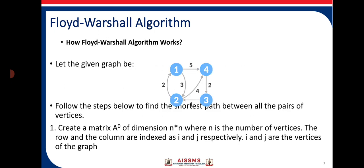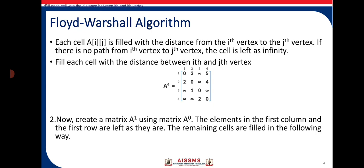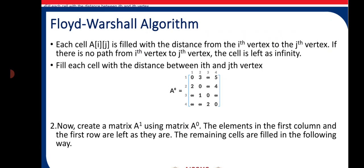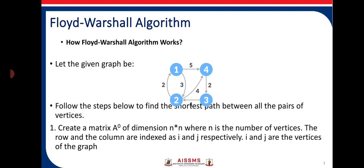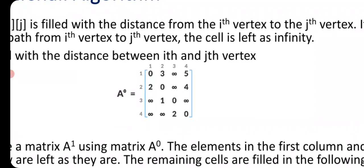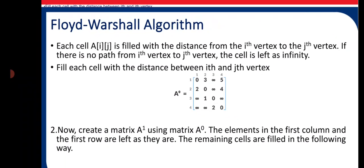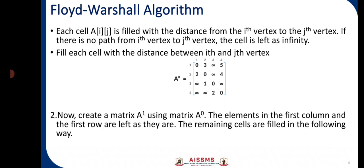For example, there is an edge from vertex 1 to 4 having weight 5, so we represent A[1][4] as 5. As there is no path from 1 to 3, it will be indicated with infinity. Similarly, all other values are filled showing vertices 1, 2, 3, 4 to 1, 2, 3, 4. If the edge is present, that weight is represented; if not, it is kept as infinity. This gives us our A0 matrix showing the initial paths.